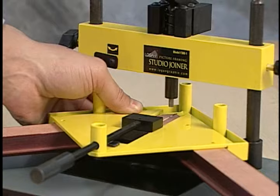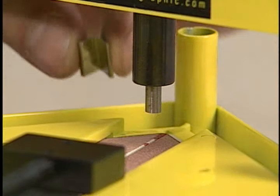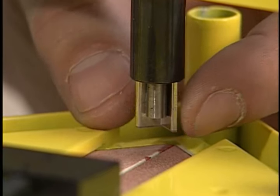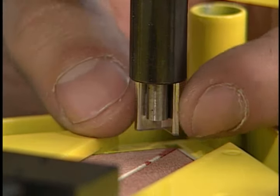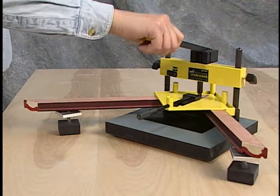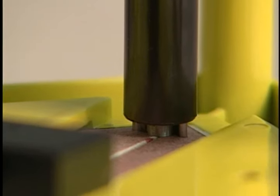Now position the molding vise directly under the magnetic tipped v-nail holder. Clip a single v-nail onto the magnetic tip going the same direction as the molding joint. Press down firmly on the handle to drive the v-nail flush into the back of the molding joint.